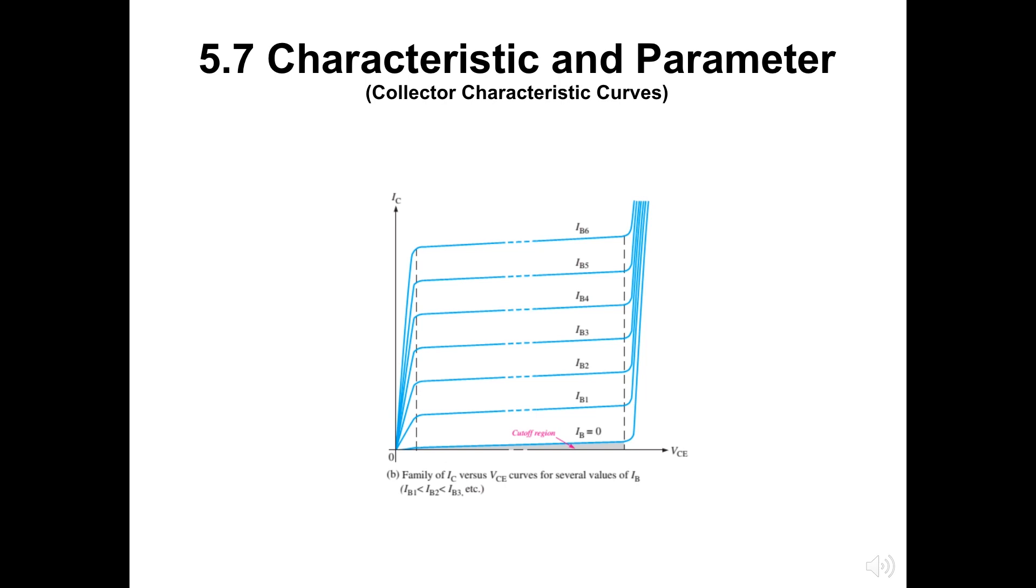For further details of the collector characteristic curve, we can take a look at this figure. Base current is almost horizontal with nearly parallel with the VCE axis. This graph represented the various value of IB when we have a graph of IC versus VCE. The shaded area in the graph is the cutoff region for the BJT at the certain condition setting.